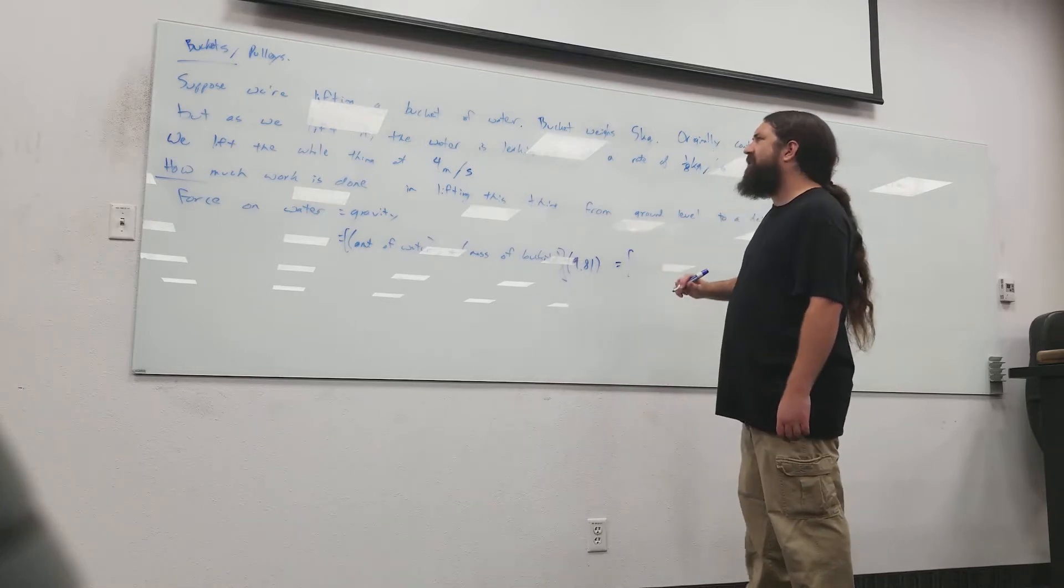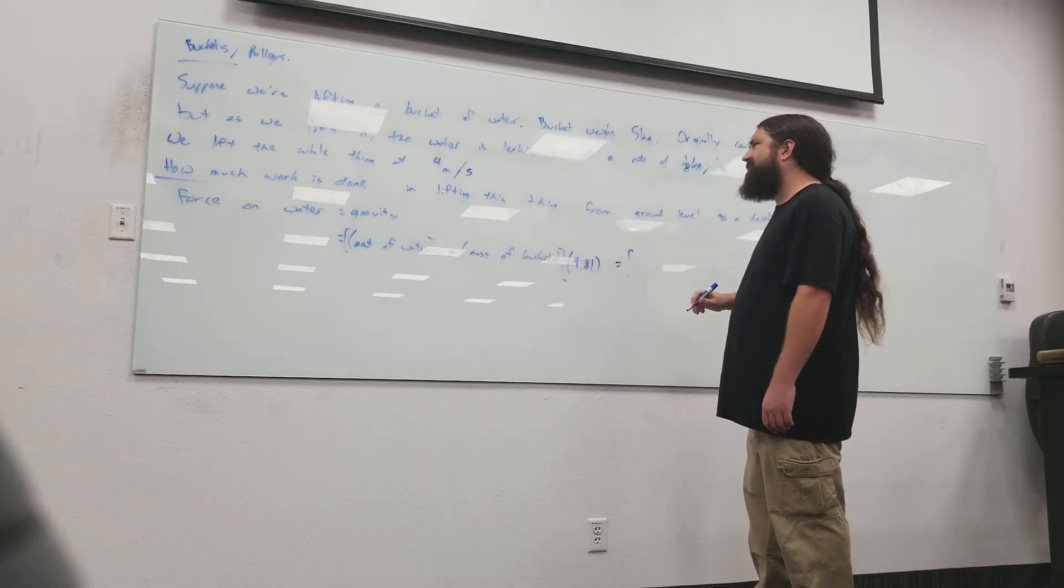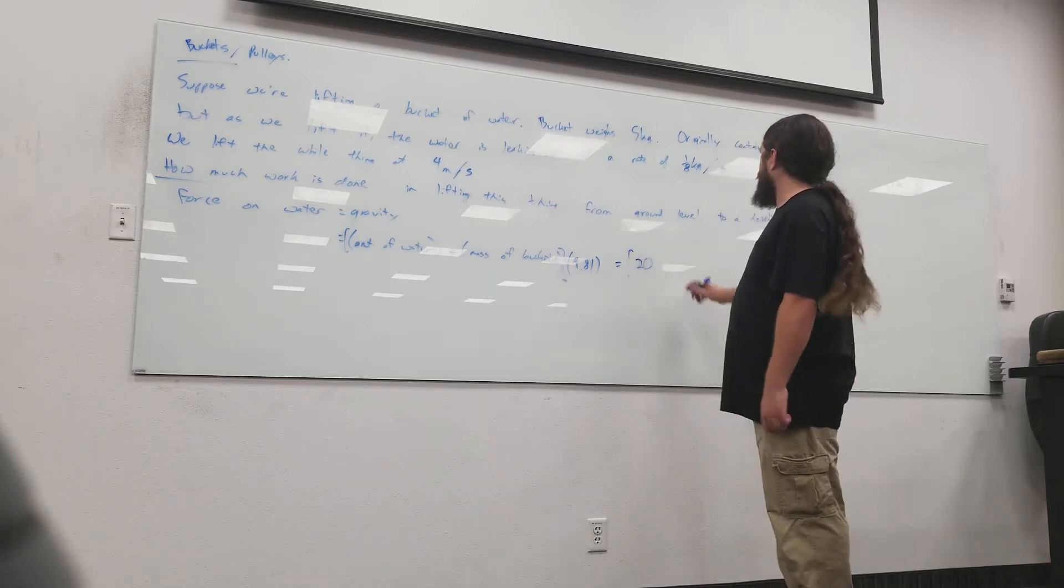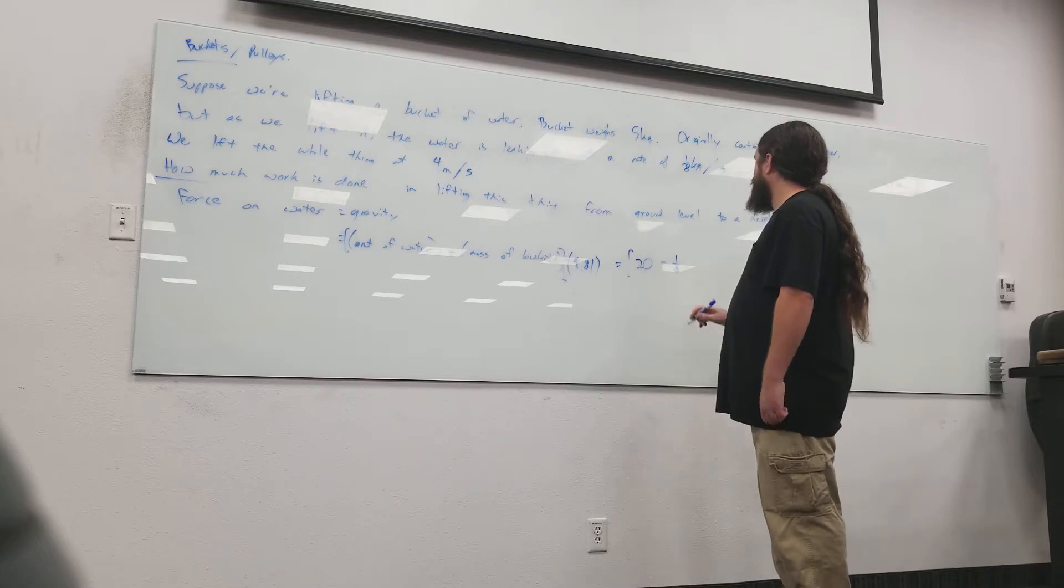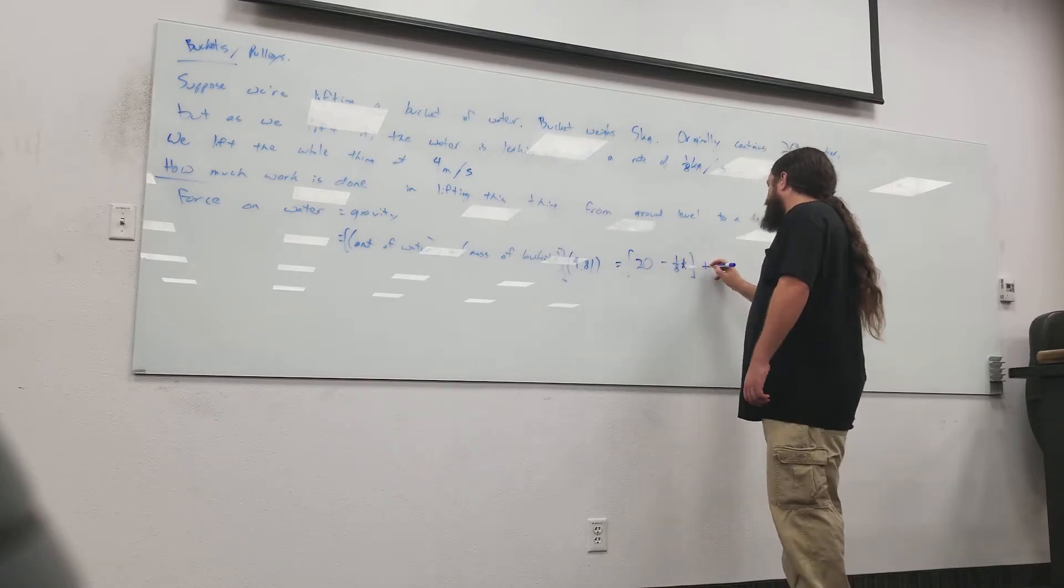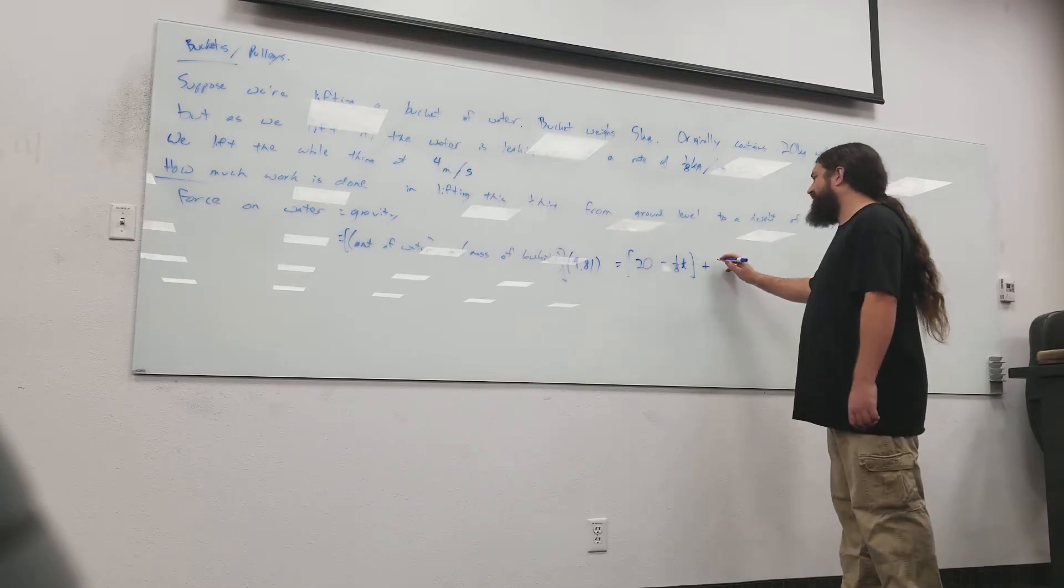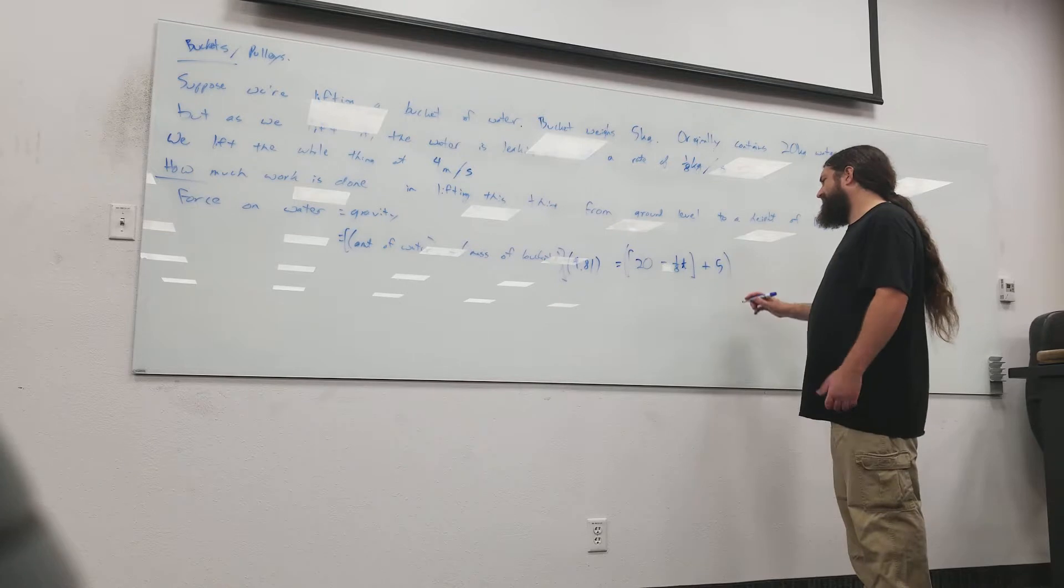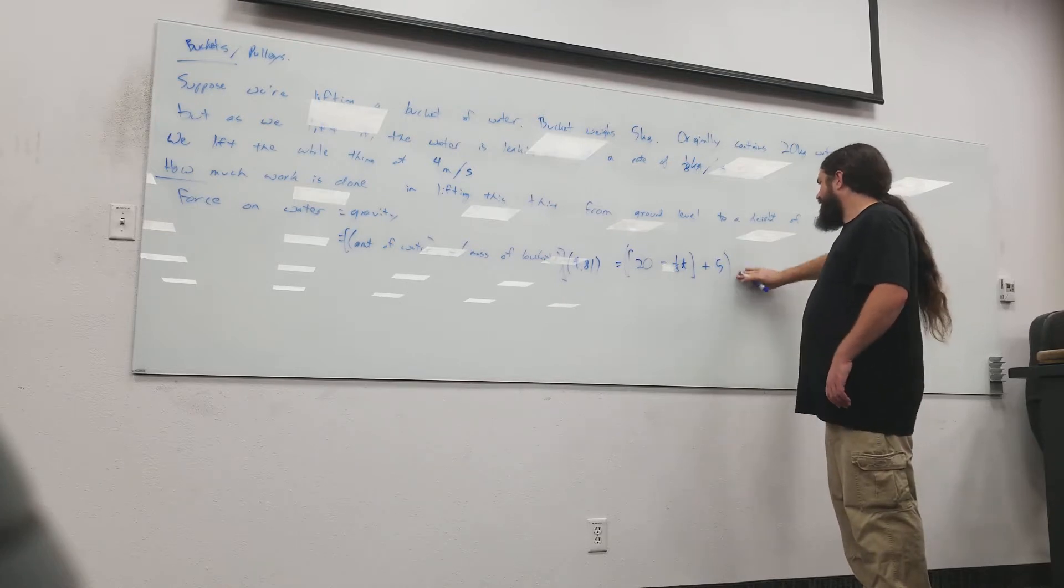If I've got, what did I start with, 20 kilograms of water? And how much am I losing? I'm losing one-eighth of it per second. So, it'll be 20 minus one-eighth times T. Is that right? And I've got a five-kilogram bucket. And that is going to be, so it'll be N times 9.81.